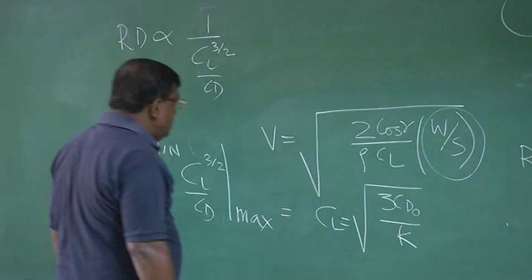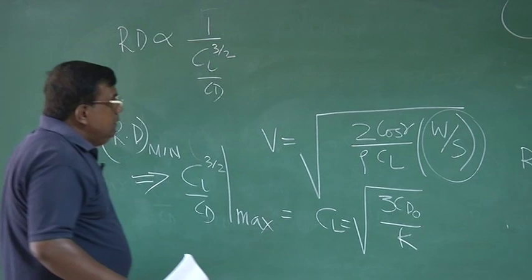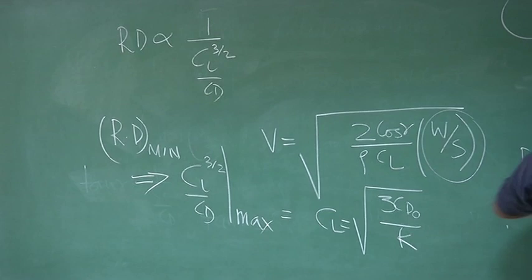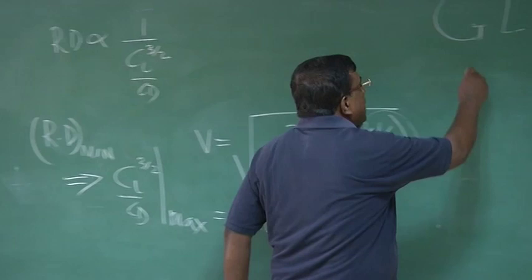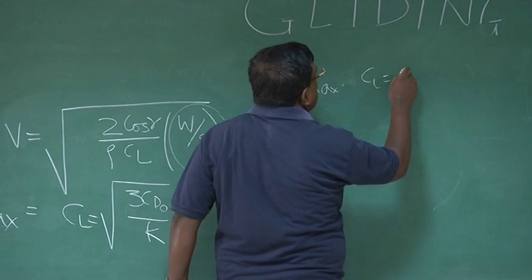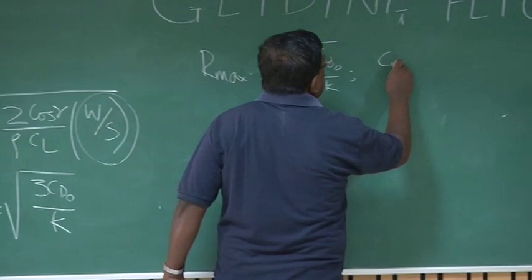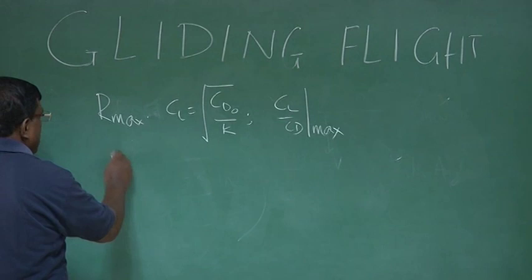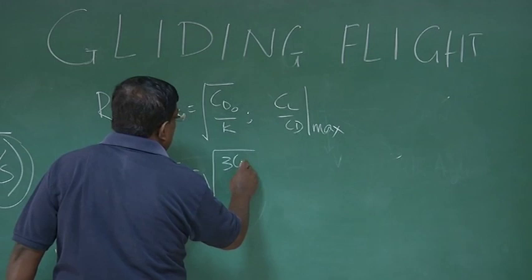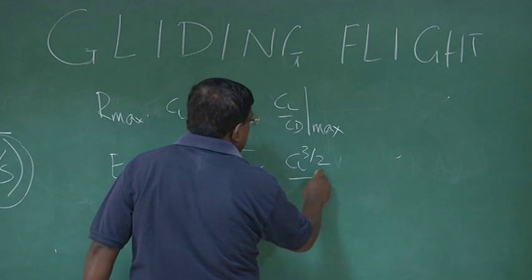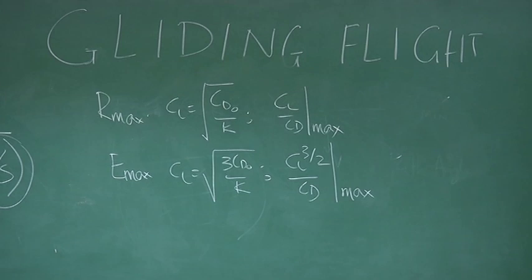So what we have learned now? One thing, if I want range maximum, then I must fly CL equal to square root of CD naught by K, because I am trying to fly such that CL by CD is maximum. And for endurance maximum, I must fly as CL equal to square root of 3 CD naught by K, because I am flying at a condition CL 3 by 2 by CD maximum. No issues, everything is clear?